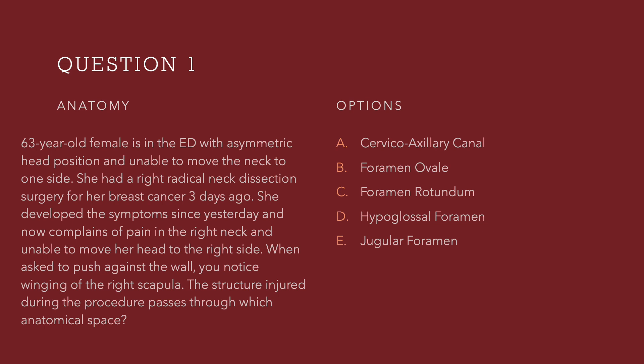Let us look at the options: cervical axillary canal, foramen ovale, foramen rotundum, hypoglossal foramen, and jugular foramen. What I want you to do is take a 10-second pause and select your choice and then we will look at the explanation.